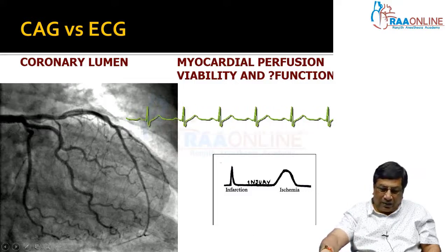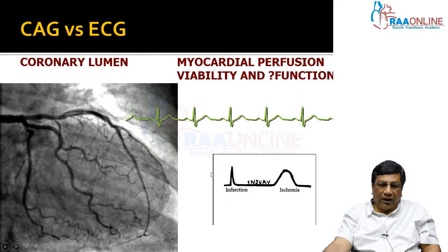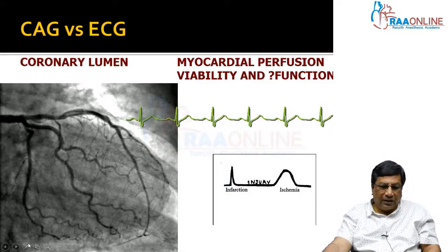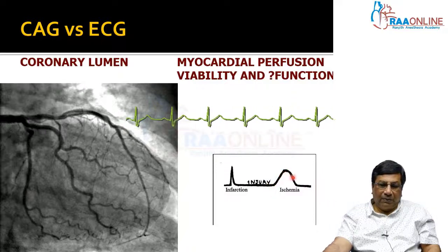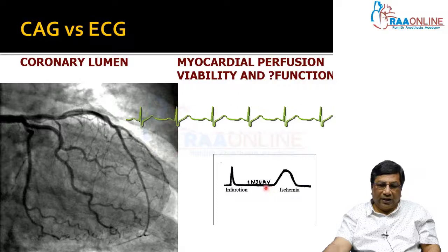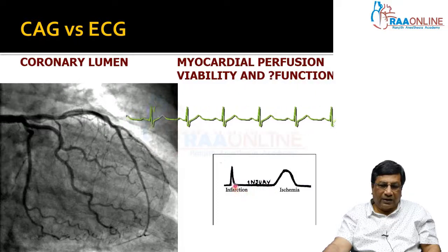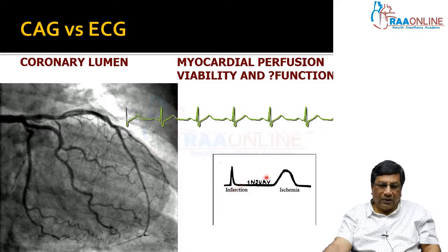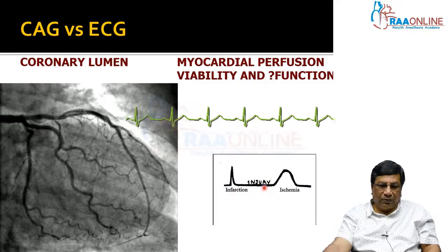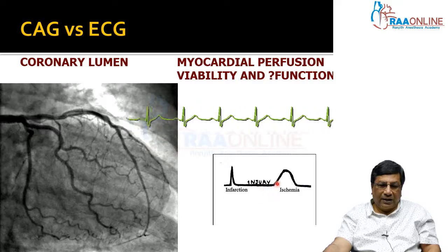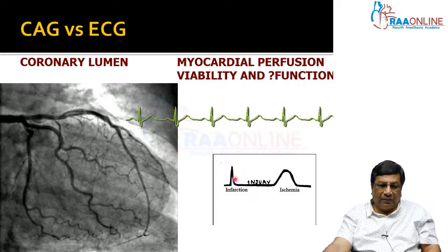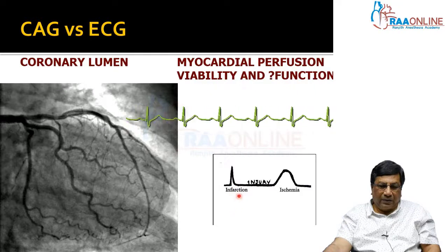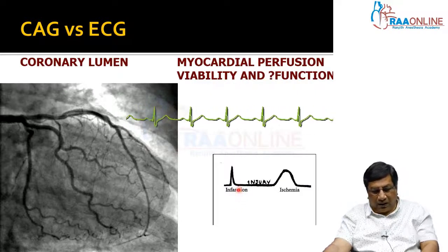Coronary angiogram is definitely an investigation, and it should not be interpreted in the absence of basic ECG knowledge. In the ECG in coronary artery disease, ischemia produces the T wave change, injury produces the ST segment change, and infarction produces QRS change. The most important segment is the ST segment, which produces either ST elevation or ST depression. The ischemia T wave can be a tall T wave or inversion. Infarction results in loss of the R wave, which represents viability, replaced by a deep pathological Q wave.